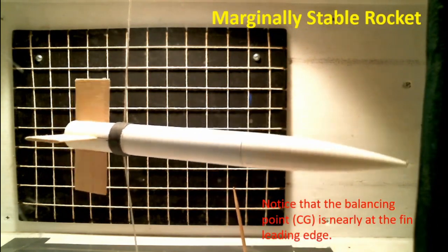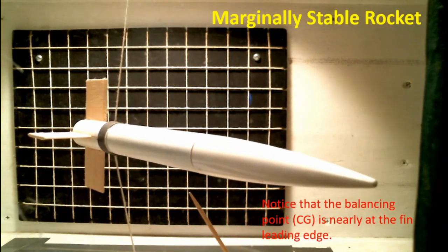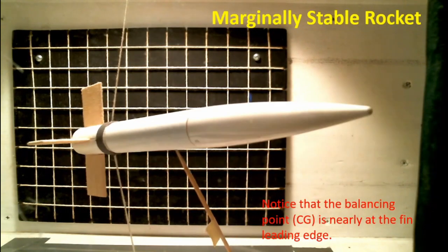Of course it can't do that in the wind tunnel—it's constrained—but you'll see the unstable characteristics of the rocket attempting to fly backwards.